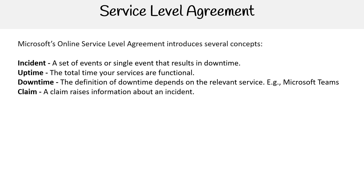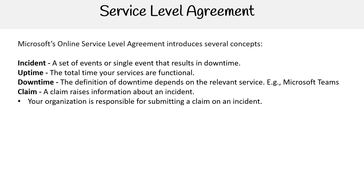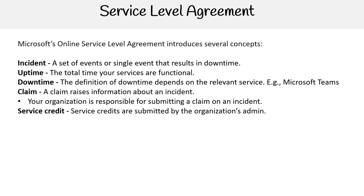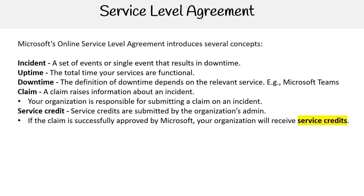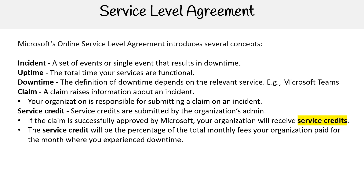Then we have claim. A claim raises information about an incident and your organization is responsible for submitting a claim on an incident. The next concept is an important one called service credit. Service credits are submitted by the organization's admin. If the claim is successfully approved by Microsoft, your organization will receive service credits. The service credit will be a percentage of the total monthly fees your organization paid for the month where you experienced downtime.